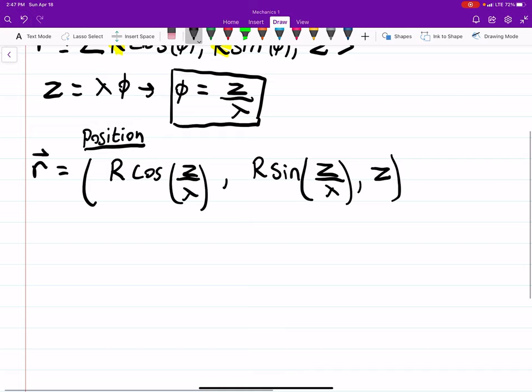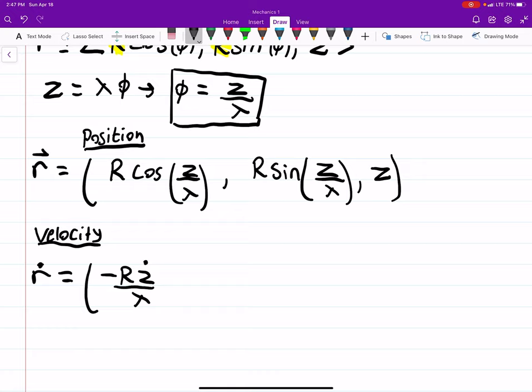The next thing we want to do is find the velocity, which is just the time derivative of position. So r dot - I'm going to drop the vector notation. If we take the time derivative of the x component, we have to do a chain rule. The derivative of cosine is negative sine, so that'll be minus z dot over lambda sine of z over lambda.